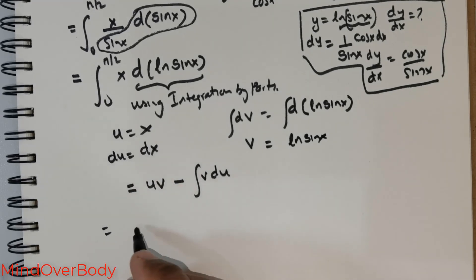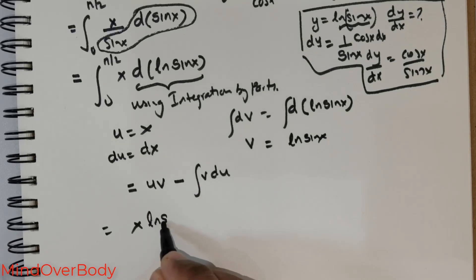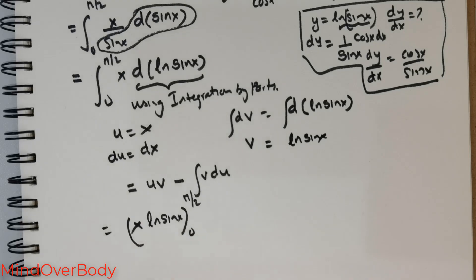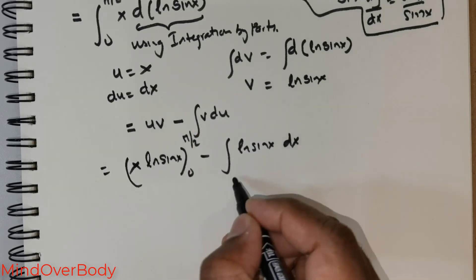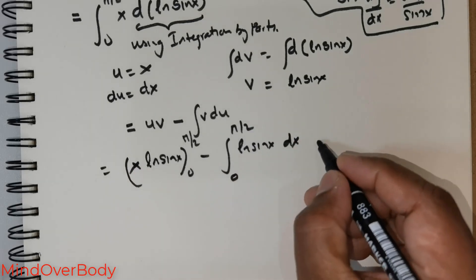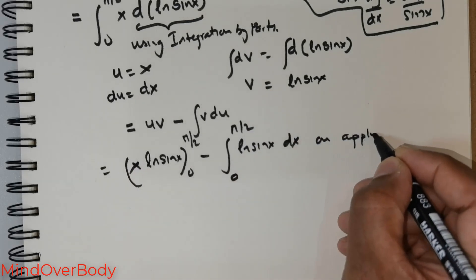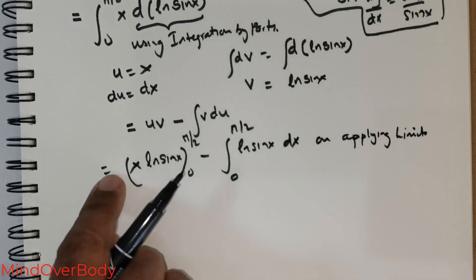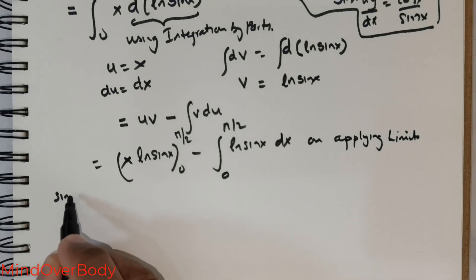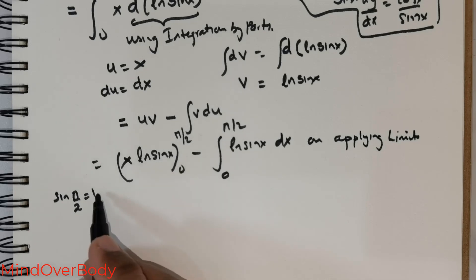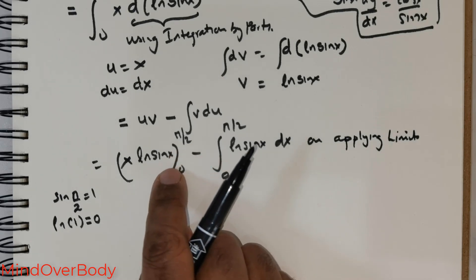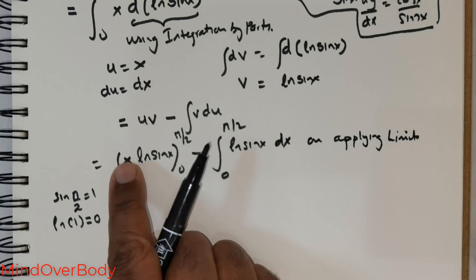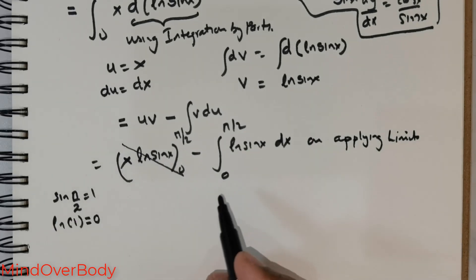Applying the formula, this equals [x · ln(sin x)] from 0 to π/2, minus the integral from 0 to π/2 of ln(sin x) dx. Applying the limits: at x = π/2, sin(π/2) = 1, so ln(1) = 0. At x = 0, the term vanishes due to x = 0. So the boundary term is zero.